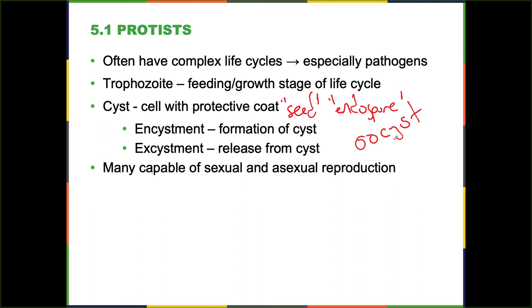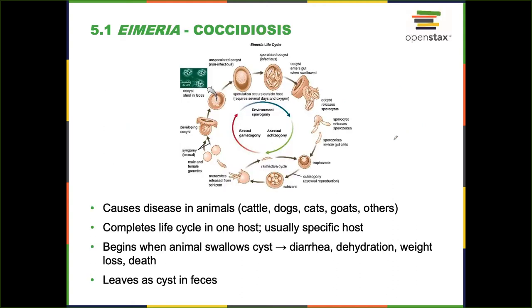Rather than talk about general things, we'll use some examples of protozoan parasites to highlight what protozoans do. Here we're going to talk about Eimeria, a genus of protozoan that causes a disease called coccidiosis. Eimeria can cause disease in animals — cattle, dogs, cats, humans. This one is highlighted because of its prominent cyst stage, which is necessary for it to cause disease. Unlike some other organisms we'll see later, it has a single host, and a specific species of Eimeria will really only infect its preferred host.